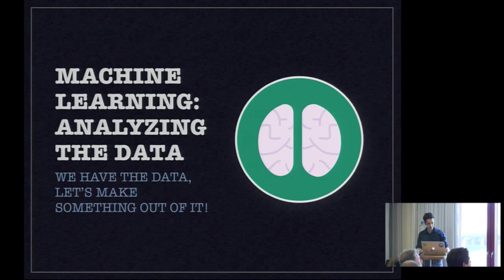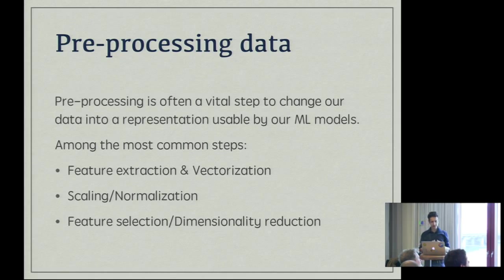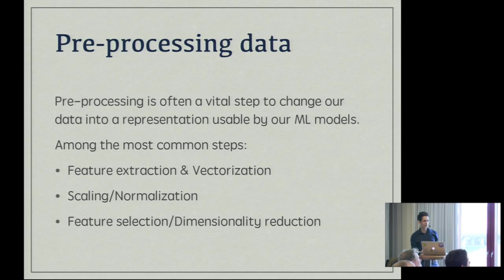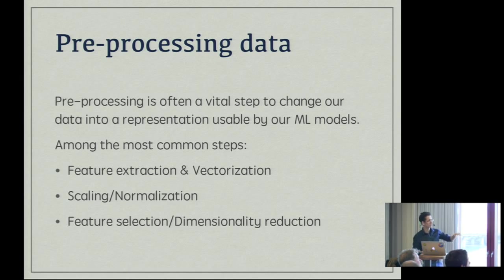Now let's talk about the actual machine learning part. Part one is preprocessing. Usually when you get your data, it's never in the way you're actually going to need it. Statistical models don't know anything about Twitter likes, images, or even texts. Most of them only deal with vectors and numbers, distributions of numbers. What you need to do is extract the features from that data, and after that usually do some preprocessing like scaling of your vectors, and sometimes feature selection and dimensionality reduction.